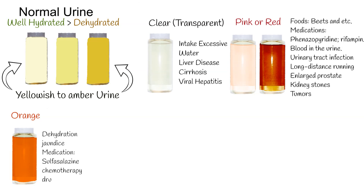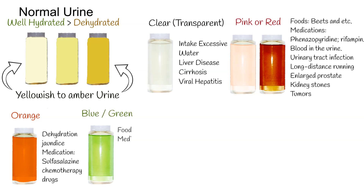Green or blue color. Some foods which contain dyes can also color urine. Medications including amitriptyline, indomethacin, and B-vitamin supplements can cause this as well. Bacterial infection can also color urine — for example, Pseudomonas aeruginosa.